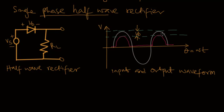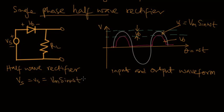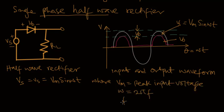In the waveform, the input signal gives us Vs equal to Vm sin(ωt), while Vout is the output waveform. Considering the sinusoidal input voltage, Vs equals Vm sin(ωt), where Vm is the peak input voltage and omega equals 2πf, where f is the frequency of the input voltage.